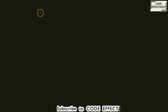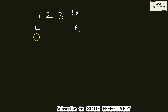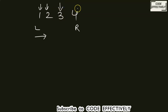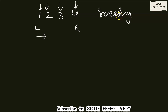Let's look at the definition of a bouncy number. For example, if we have the number 1, 2, 3, 4 — moving from left to right, each number is greater than the previous one. 2 is greater than 1, 3 is greater than 2, and 4 is greater than 3. So when all numbers are increasing from left to right, it is known as an increasing number.